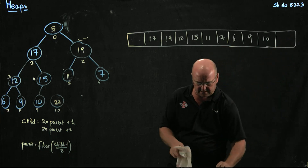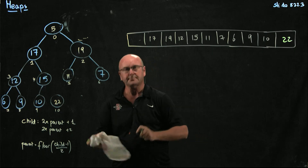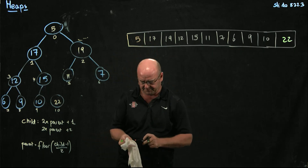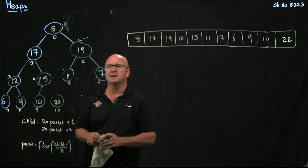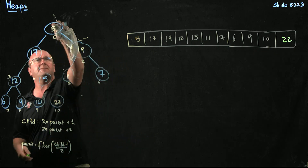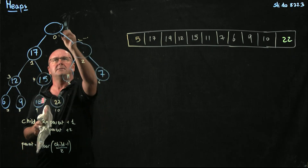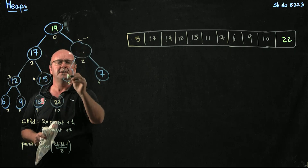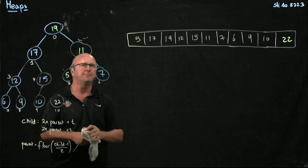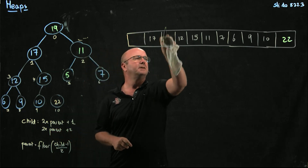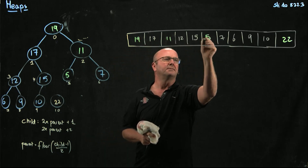Let me get a different color so it's clear. Here's our 22, and here's our 5. So now we have to correct our heap, so we take the 5, we swap it with the 19, then we'll swap the 5 with the 11. So now we've got 5, and 19, and 11 becomes 19, 11, and 5.